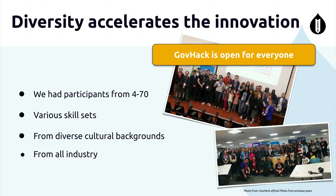GovHack is also for all skill sets — it's not just for coders. Someone from service design, someone from project management can all participate. A good team size is five with some coders, some service design, and some business people. We've seen teams of five with all coders create an awesome project, but they didn't win because they didn't know how to present it. That's why an ideal team size is five with multiple skills — and that promotes innovation. We have people from diverse cultural backgrounds and from all industries.